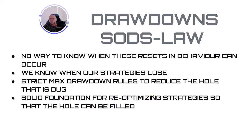I call it Sod's Law — there's no right time to start trading a particular strategy and no way to know when these behavior resets will occur. It could be a massive miss on CPI data, an NFP complete miss, or massive news from around the world. The only time you know it's happened is when your strategies start to lose. We can restrict that loss with strict max drawdown rules, and when we develop our automated strategy builders we optimize to keep that max drawdown to the lowest point while still achieving good results. If that max drawdown in the data gets exceeded, we switch it off.